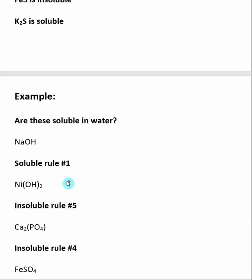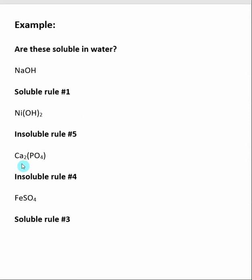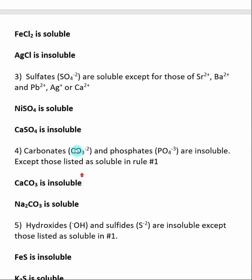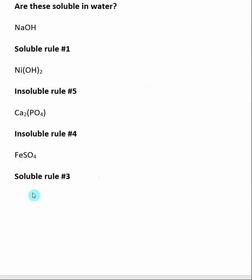Next, calcium phosphate — the applicable rule is Rule 4. Always check Rule 1 first; in this case it doesn't apply. Rule 4 says carbonates and phosphates are insoluble except for those in Rule 1. Calcium is not in Rule 1, so calcium phosphate is insoluble. Lastly, iron(II) sulfate — Rule 3 applies here. Start with Rule 1, which doesn't apply, then continue. Rule 3 says sulfates are soluble except for those with strontium, barium, lead, silver, and calcium. Iron(II)⁺ is not listed as an exception, so iron(II) sulfate is soluble based on Rule 3.